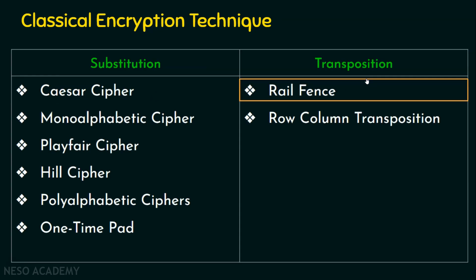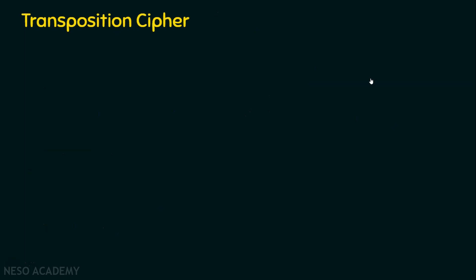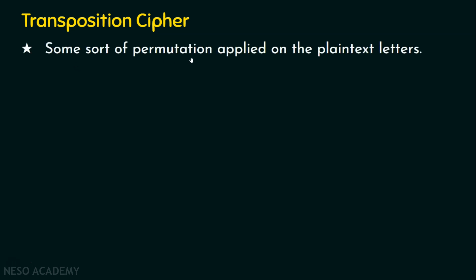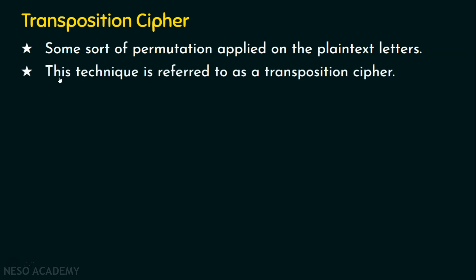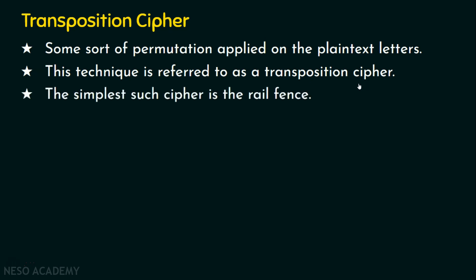In transposition, we are going to focus on the rail fence technique in this presentation. Before we step into rail fence, we shall understand what transposition is. In the substitution technique, every character is replaced by other characters. Whereas in transposition, there will not be any replacement or substitution. Rather, the position of the plaintext character will be changed. Some sort of permutation will be applied on the plaintext letters so that their positions are changed and it becomes unreadable. This is why this technique is referred to as a transposition cipher. Rail fence is the simplest transposition cipher.